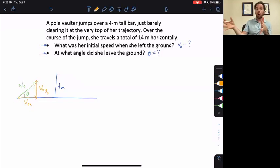Now, you may, in your class, be calling v-naught x simply v-x. And that's fine, because v-x doesn't change over the course of the problem. Only the vertical velocity changes over the course of the problem. Horizontally, the object, or the person in this case, is not accelerated.